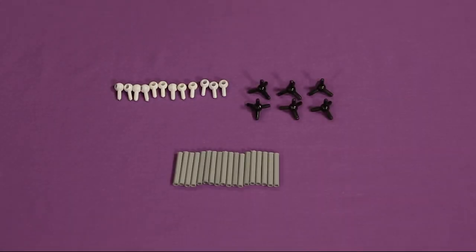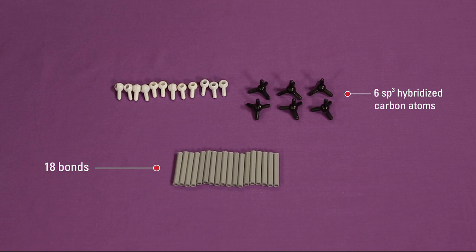To build a cyclohexane model, you need six sp3 hybridized carbon atoms, the black atoms with four prongs, 18 bonds (these are your gray tubes), 12 hydrogen atoms (the white atoms).